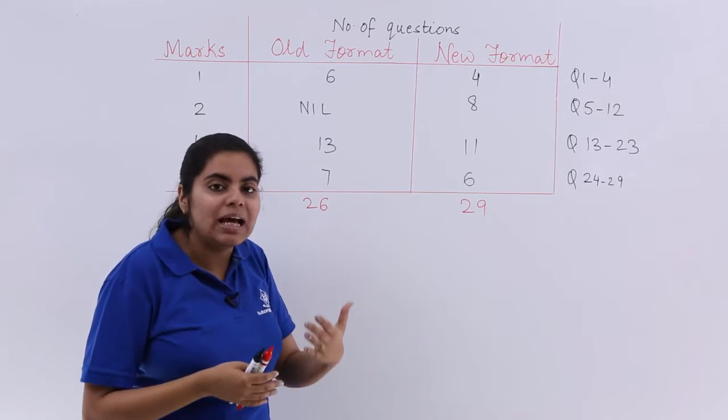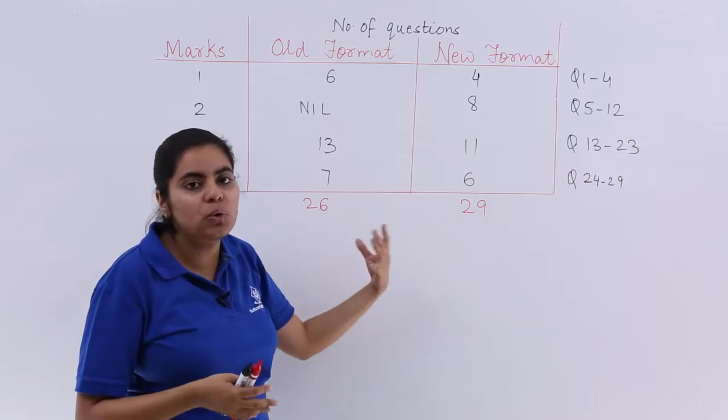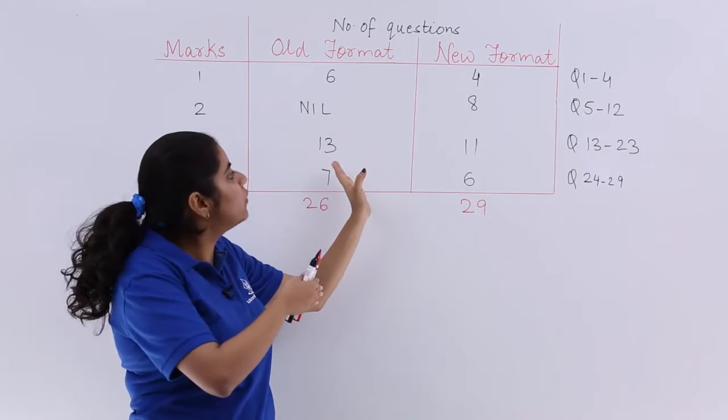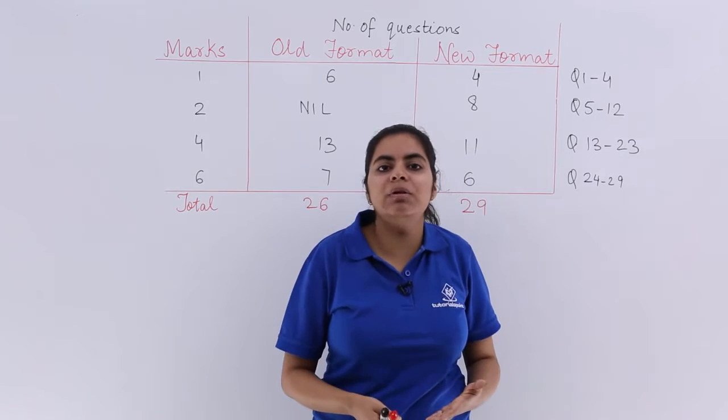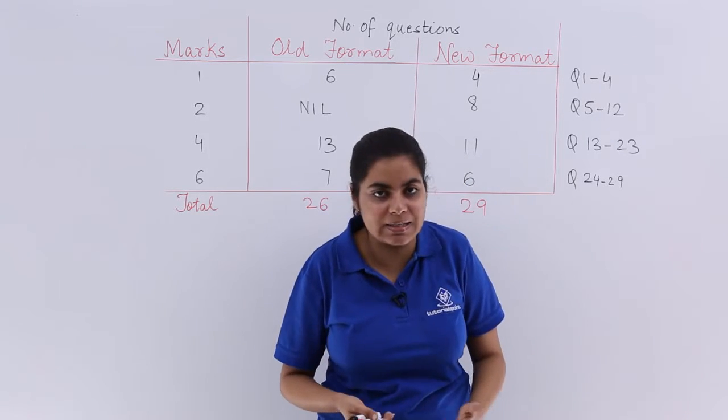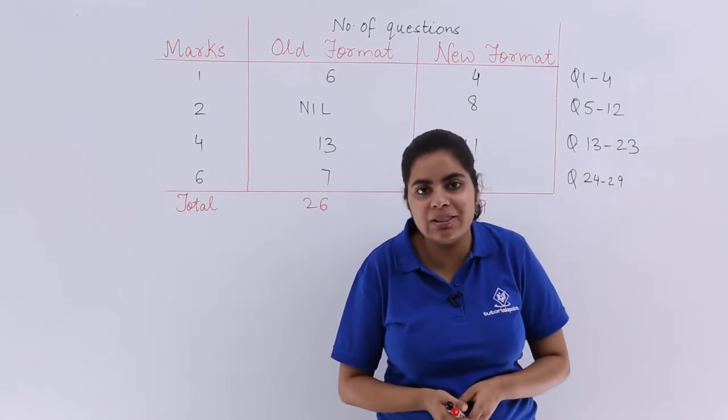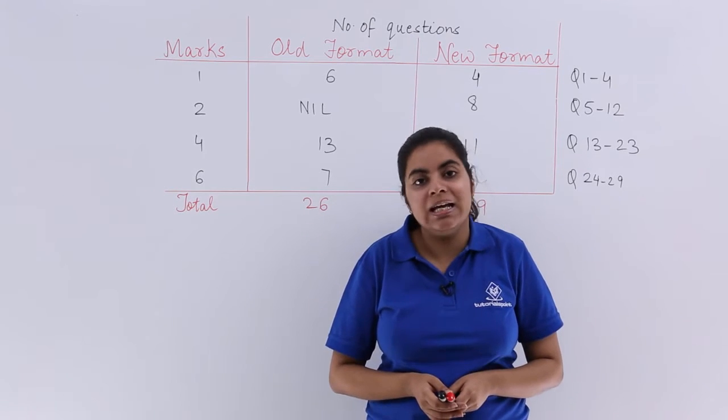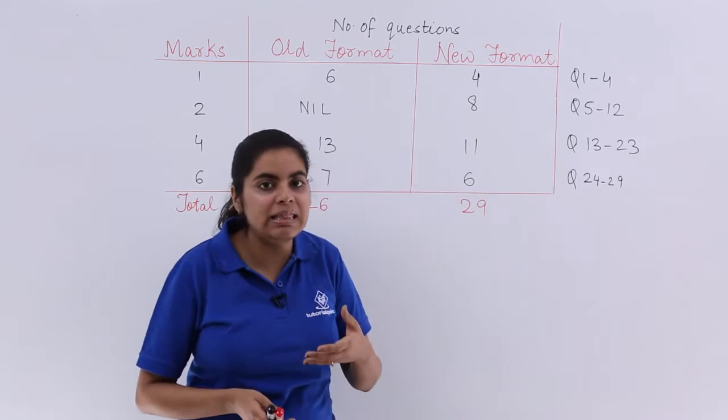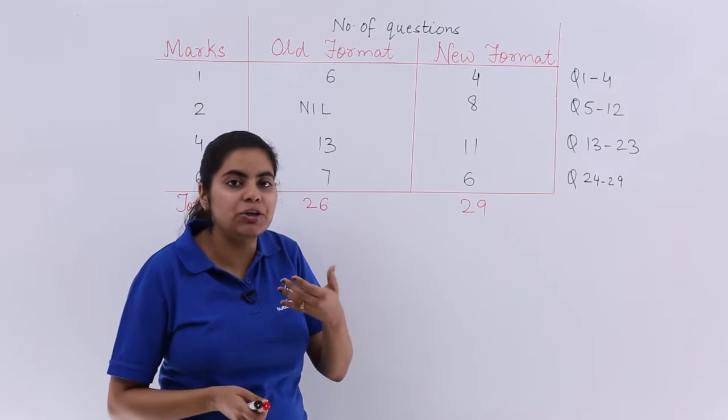So even that has dropped down. So that means they have dropped down one or two questions from each segment and have introduced certain two markers. So what could be the possible reason and how this could benefit us? The possible reason could be the length of the question paper. Now how it can benefit us? Definitely the question paper length and the solutions that you would be doing.